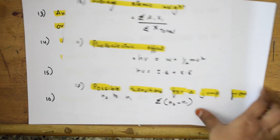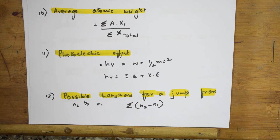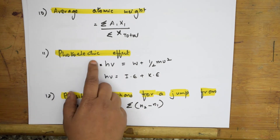For average atomic weight, the formula is: Average atomic weight = Σ(A_i × x_i) / Σ(x_total), where A_i is the mass number of each isotope and x_i is its percentage abundance. This is used when isotopic masses and abundances are given — just apply the values directly into the formula.